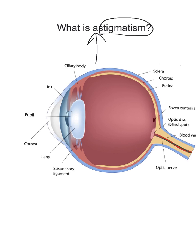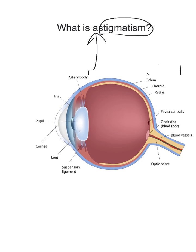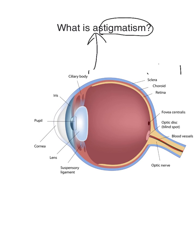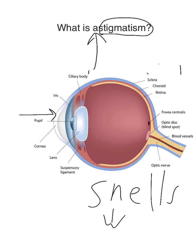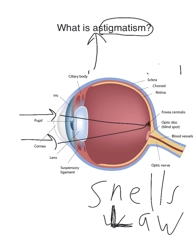I have here a picture of a human eye. First I'm going to talk about a normal human eye, an eye without astigmatism. What happens is light rays come into the eye, hit the cornea and get refracted due to Snell's law. They get refracted into a single focal point right on the macula, or the retina.